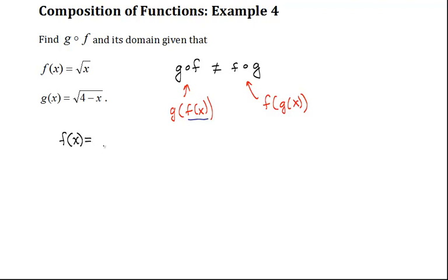So we start off with f of x equals the square root of x. Now we need to sub this in for x everywhere x exists in g of x. So I'm going to get g compose f of x equals the square root of 4 minus, and instead of writing x, I'm going to write f of x, which is just the square root of x. So we have our function.